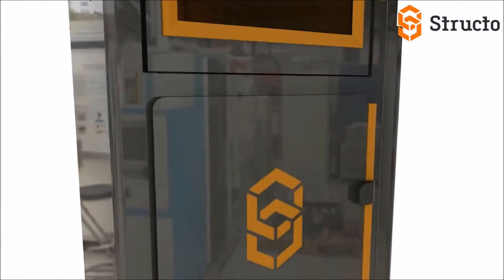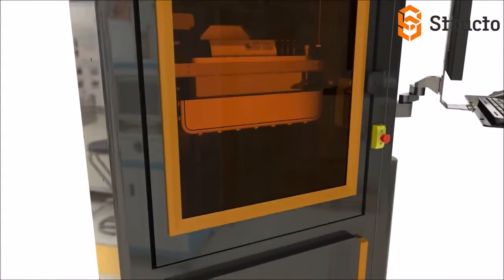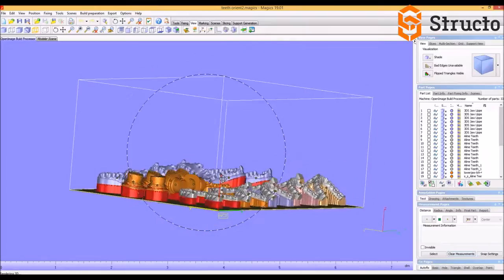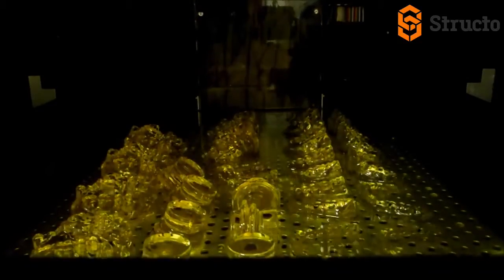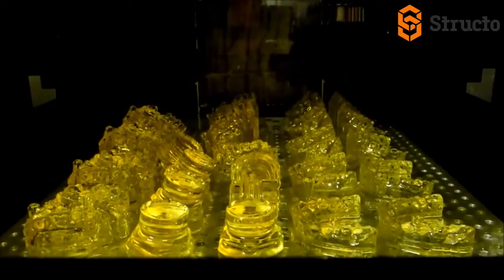Structo's first machine, the Rapid Form, features a large build tray measuring 16 by 13 by 12 inches with the capability to produce any number of objects within that volume in a single overnight print job.